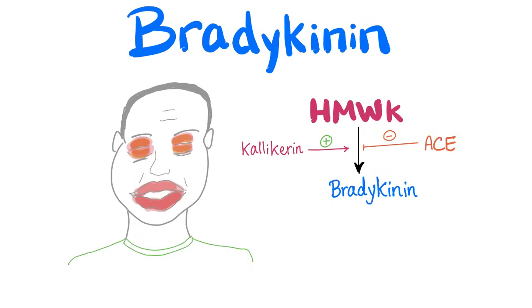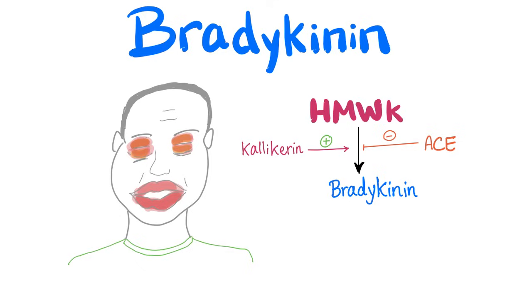Let's talk about bradykinin — where does it come from? It comes from high molecular weight kininogen. Calicrin will stimulate this process, but the ACE enzyme will inhibit it. In my video on the coagulation cascade, we talked about the intrinsic pathway and what stimulated factor 12: the subendothelial collagen, calicrin, and high molecular weight kininogen.